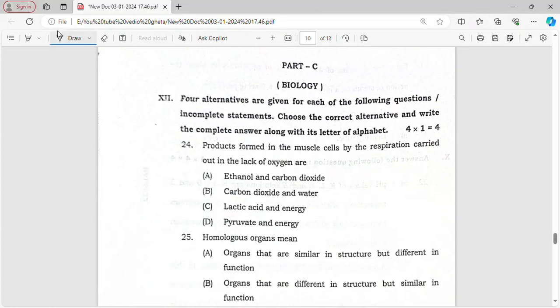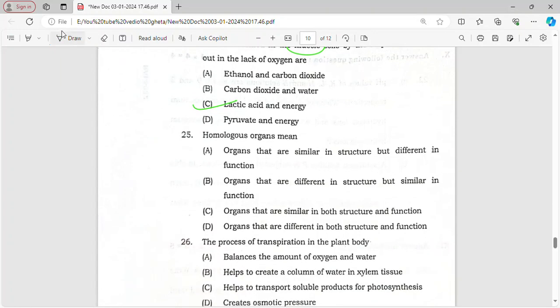Product formed in muscle cells by respiration - in muscle cells lack of oxygen takes place, lactic acid is formed. Homologous organs means same structure, different functions.